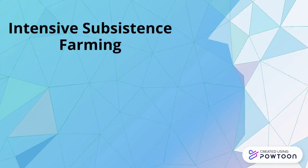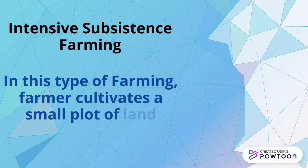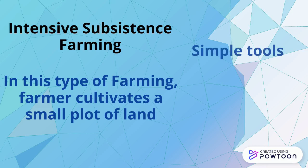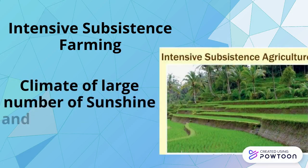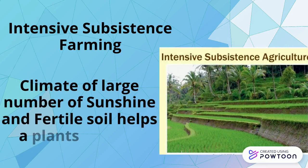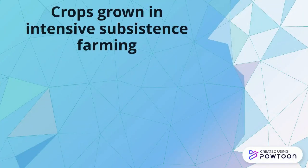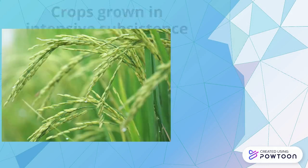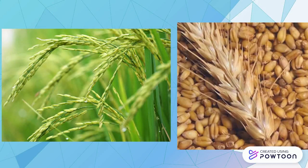Intensive subsistence farming. In this type of agriculture, the farmer cultivates a small plot of land with simple tools and low technology. A climate with a large number of days with sunshine and fertile soil helps the growth of crops. The main crops grown in intensive subsistence farming are rice, wheat, pulses, etc.